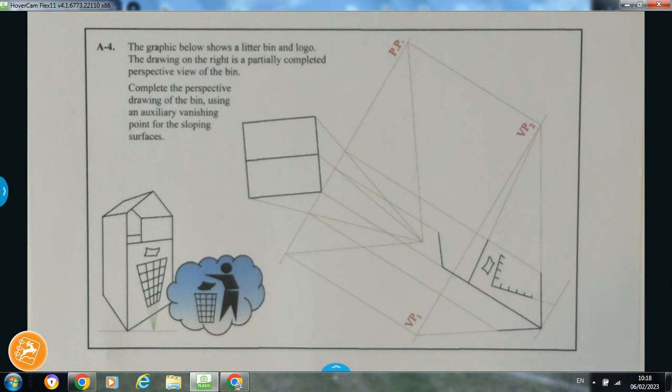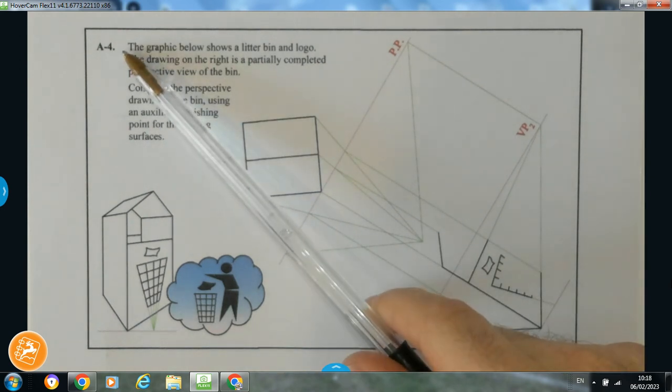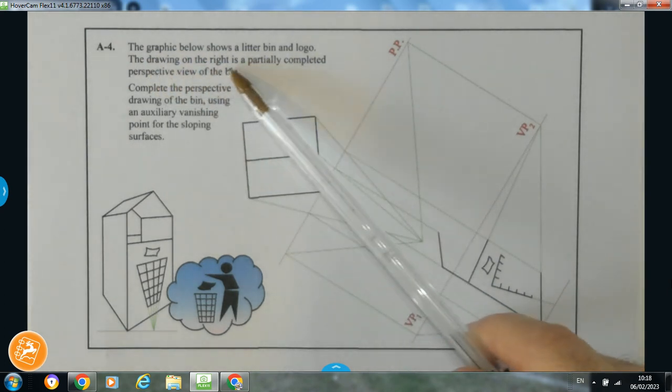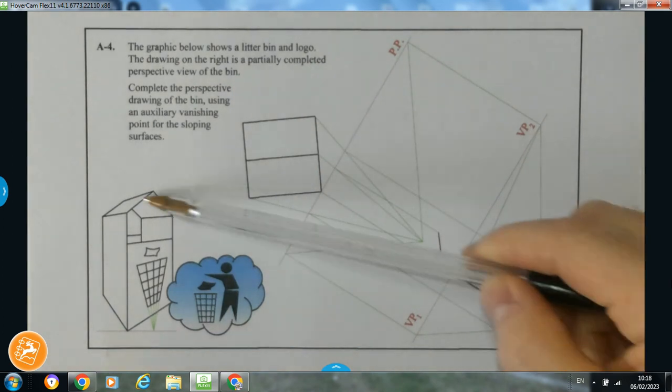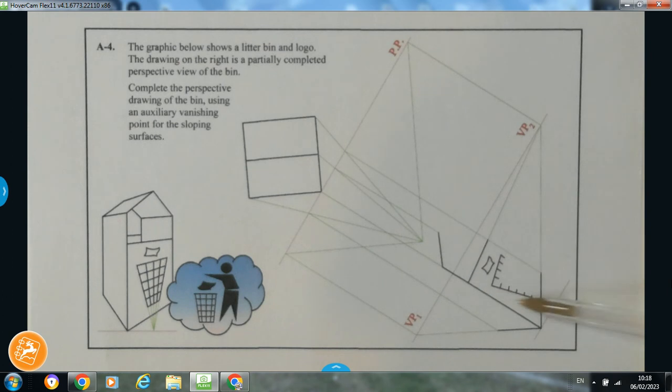Hi folks, this question here is a short question from the 2012 Section A from the higher level paper. It's primarily focused on the topic of perspective. So you can see here if we read the question, it's question A4 in the 2012 paper. The graphic below shows a litter bin and logo. The drawing on the right is a partially completed perspective view of this bin. You can see here we're given a pictorial view and a partially completed structure in perspective, along with the plan view of the structure.